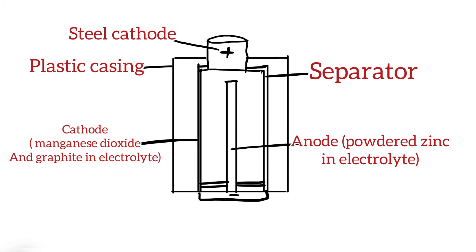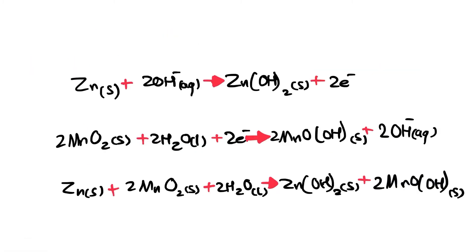Over time the battery starts to lose its ability to store energy as the reactants within the cell are consumed. The chemical reactions occurring in the battery include the following: at the anode, zinc powder reacts with hydroxide ions in the electrolyte to produce zinc hydroxide and two electrons. At the cathode, manganese dioxide uses two electrons as it reacts with water in the electrolyte to form manganese oxide hydroxide and hydroxide ions.